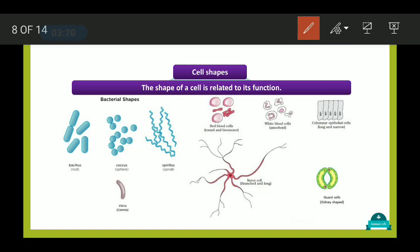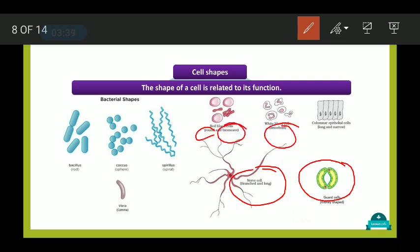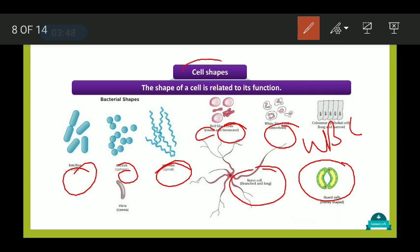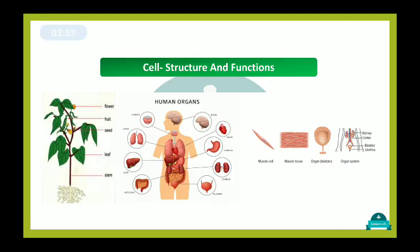Cells have many different shapes. For example, the guard cell has a kidney shape; the branch-shaped cell is found in our nerve cells; red blood cells are round and biconcave; amoeboid shape is seen in WBCs; and there are also spiral, spherical, and rod shapes.